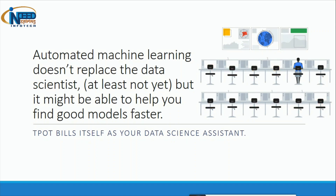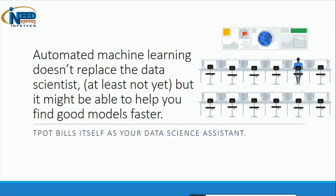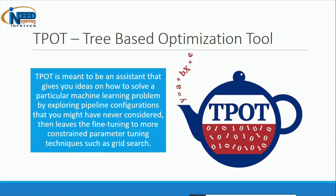Let us discuss about a tool called TPOT. TPOT builds itself as your data science assistant. TPOT is a tree-based optimization tool and it is meant as an assistant because it gives you ideas by exploring the complete pipeline configurations of your machine learning model. It will also consider the parameters and optimize them so that you have the better model to work with your problem statement.